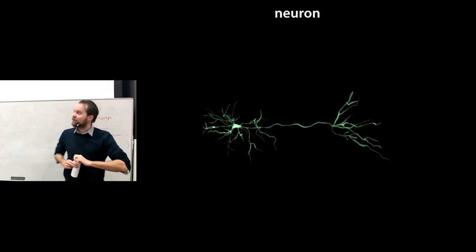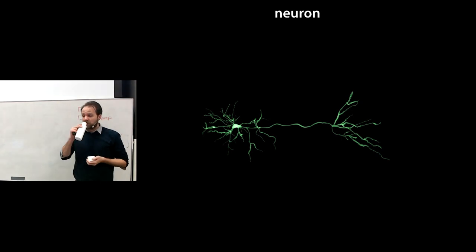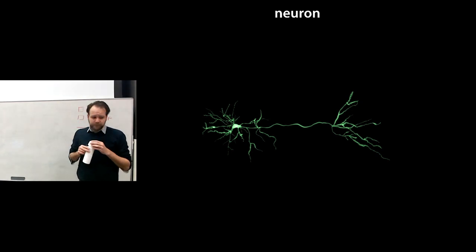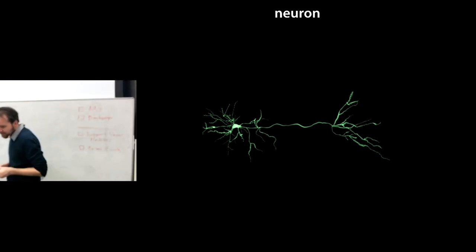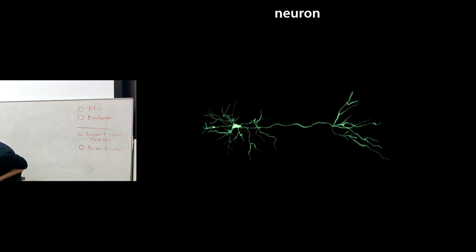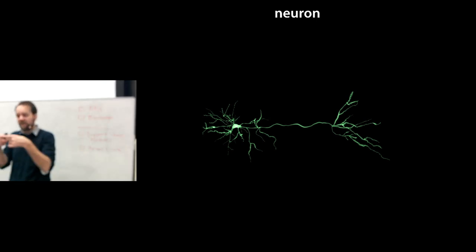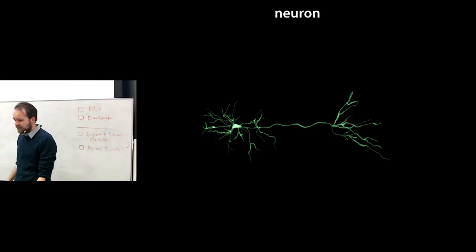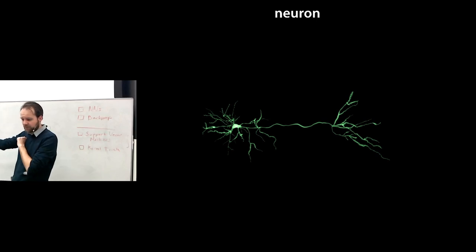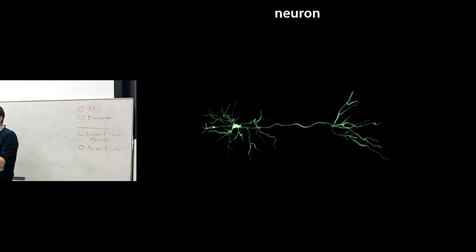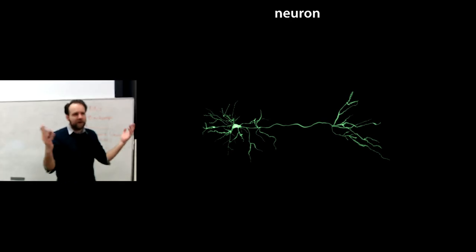This is a neuron — a picture of a brain cell. It receives different input signals through connections called dendrites, so it has many different inputs called dendrites. It generates one output which it sends out through an axon. The axon splits and sends that same signal to lots of different cells. That's how your brain works.